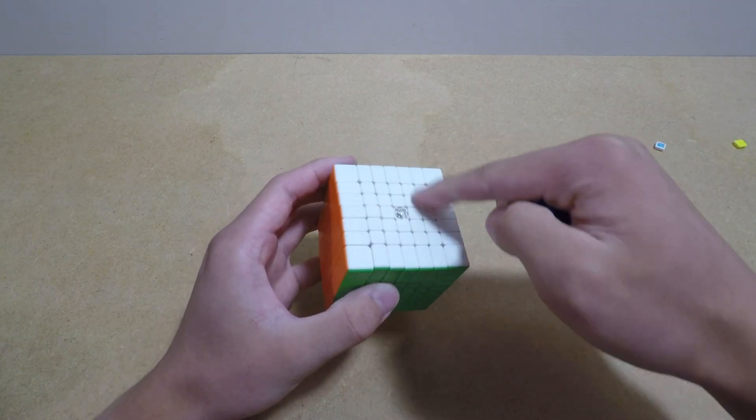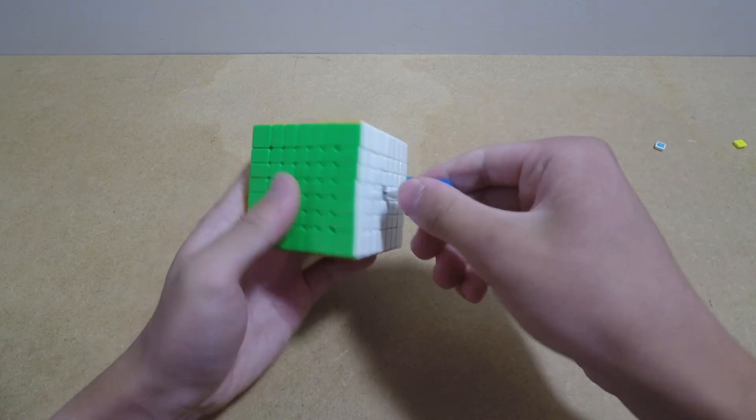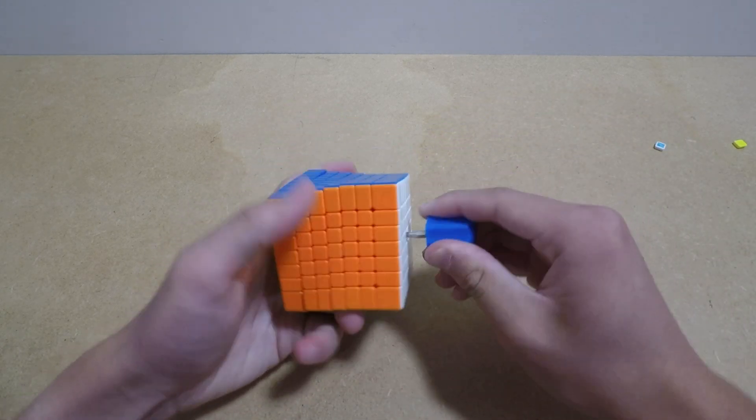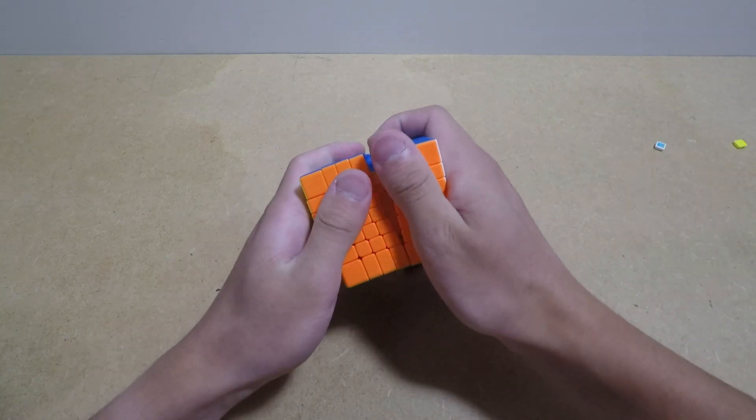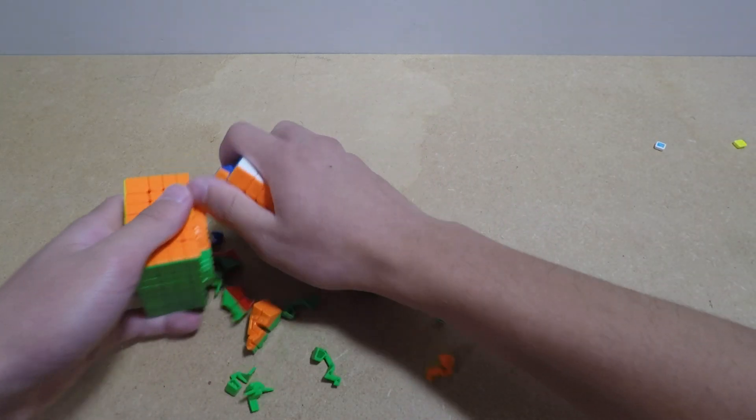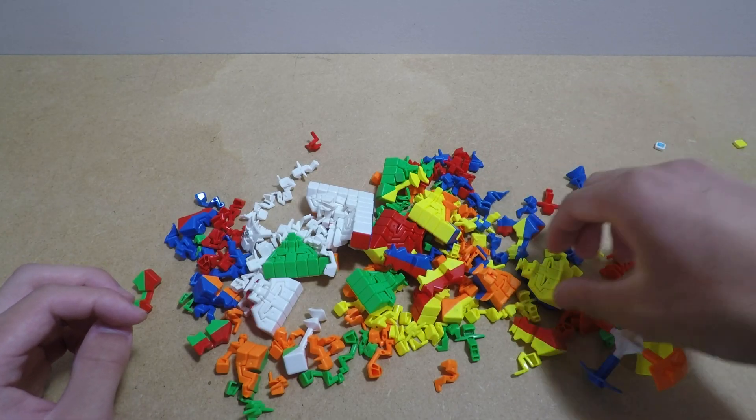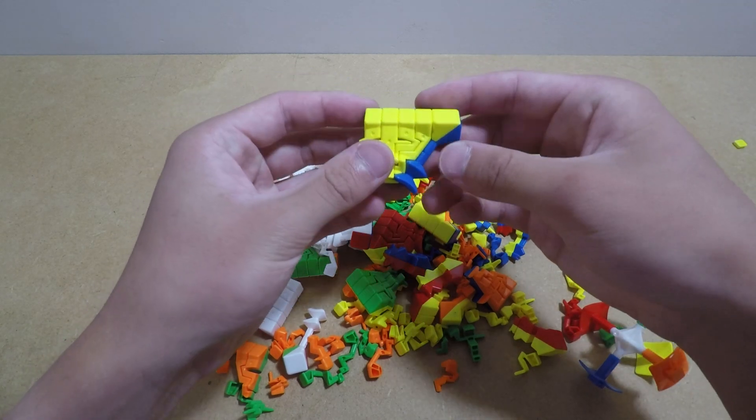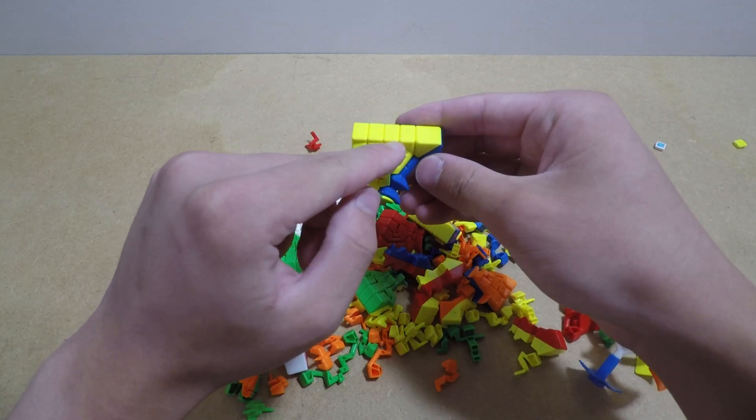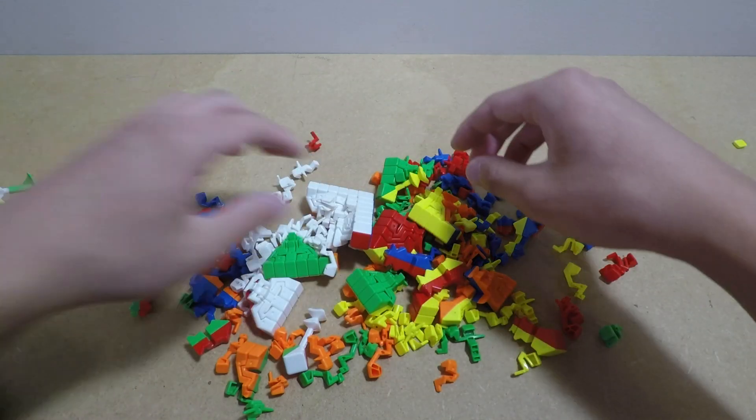You could probably tape together the center pieces if you want, but it won't help that much. It's not that hard to reassemble it, I find. Alright, so now we're just trying to separate the pieces. The only pieces we need are the outer ring of pieces, so pretty much just the midges, inner wings, outer wings, and corners. You could also put the core aside.